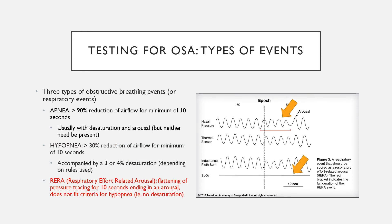There is a third type of breathing event called a RERA, or respiratory effort related arousal. You can see that on this slide. At the top arrow, there's a decrease in airflow as you are trying to breathe through that straw I was talking about before, and there's a little bit of an arousal afterwards. But notice at the bottom arrow, there's no drop in your oxygen level. We can't score this kind of event on a home sleep apnea test, but you don't need to worry — we can make all the decisions we need based on your apneas and hypopneas.